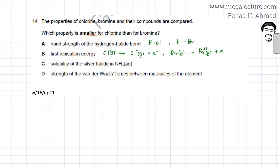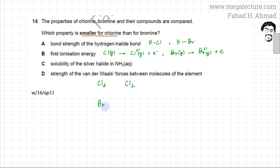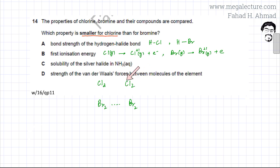That leaves us with option D, which should be the correct answer. This option refers to the strength of van der Waals forces between molecules of the element. Chlorine and bromine are both diatomic molecules and they are non-polar, so they experience temporary dipole-induced dipole attractions. As molecules collide and bump into each other, one side becomes partial negative and the other partial positive.